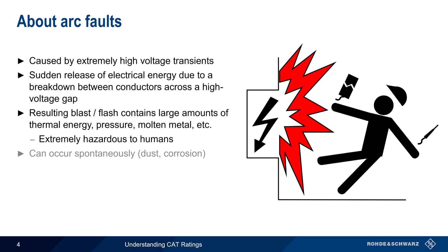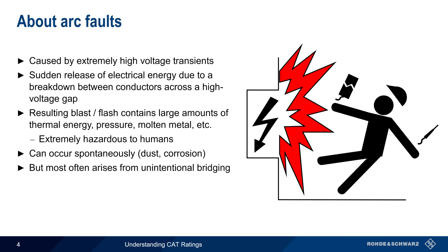Arc faults can occur spontaneously due to dust, corrosion, etc., but they most often occur when human activity causes contacts to be bridged unintentionally, such as during probing, when tools are dropped, etc.